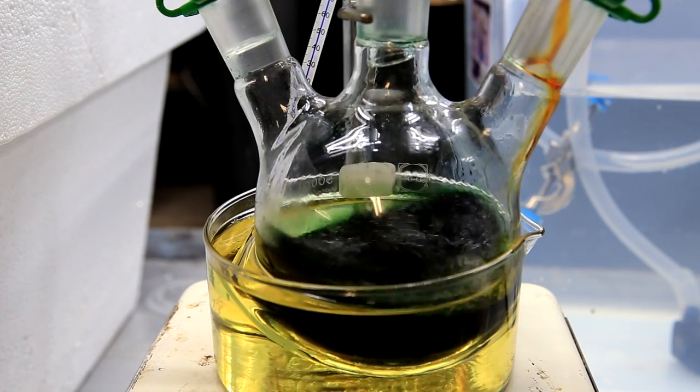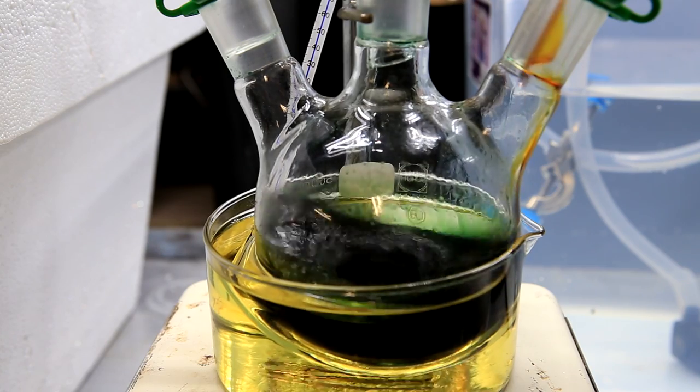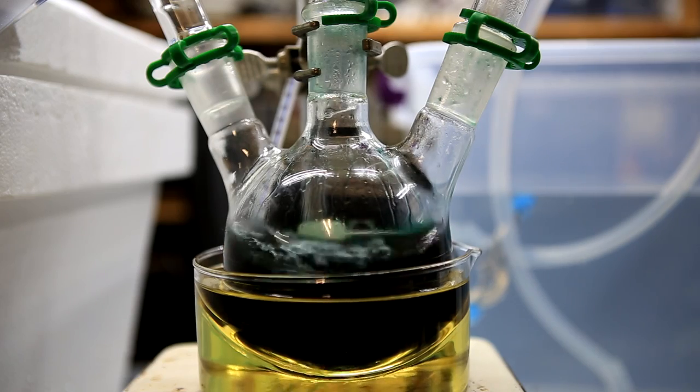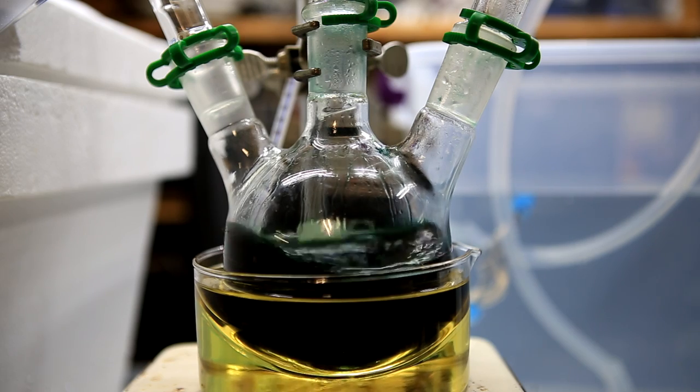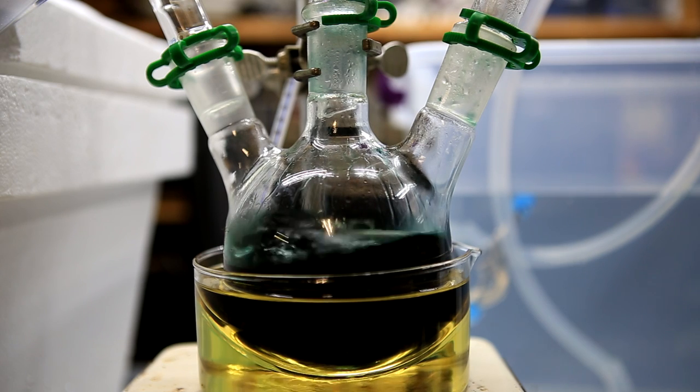As more and more chromic acid is added, it'll get darker and darker green until it nearly becomes black. Once all of the chromic acid solution has been added, keep boiling it until no more distillate comes over. I boiled it for about 15 minutes after everything had been added.